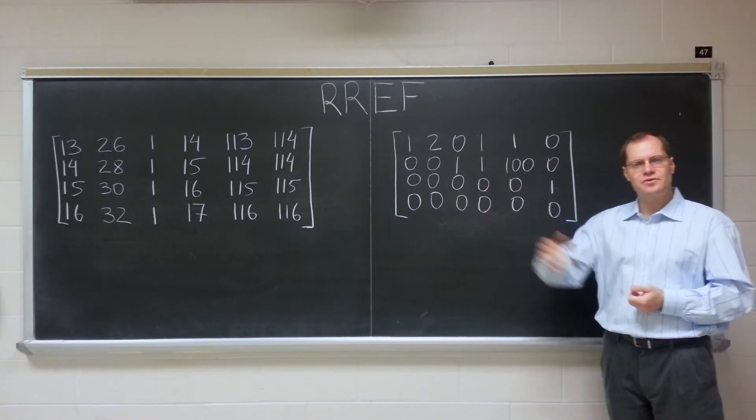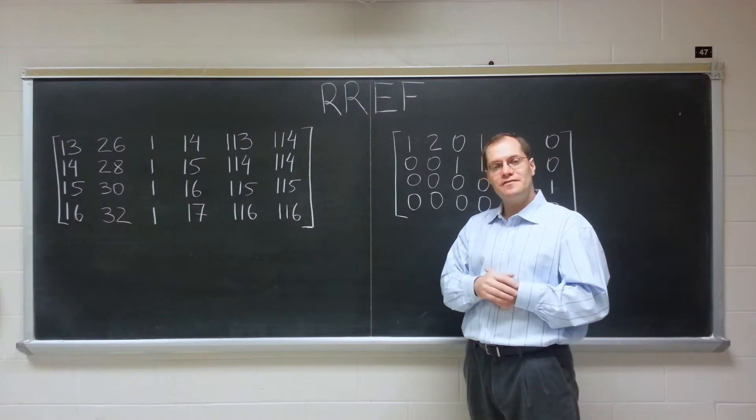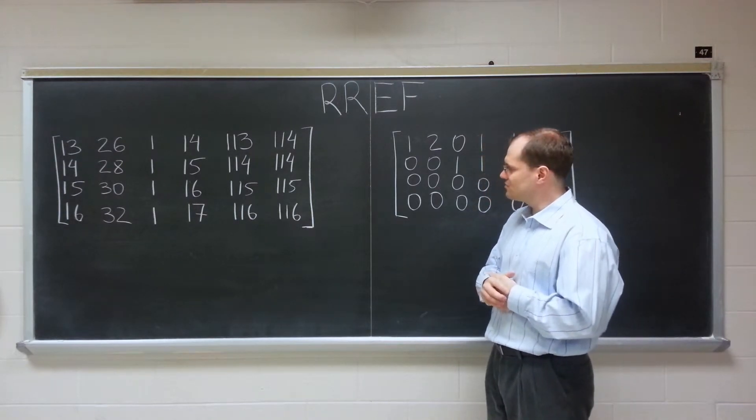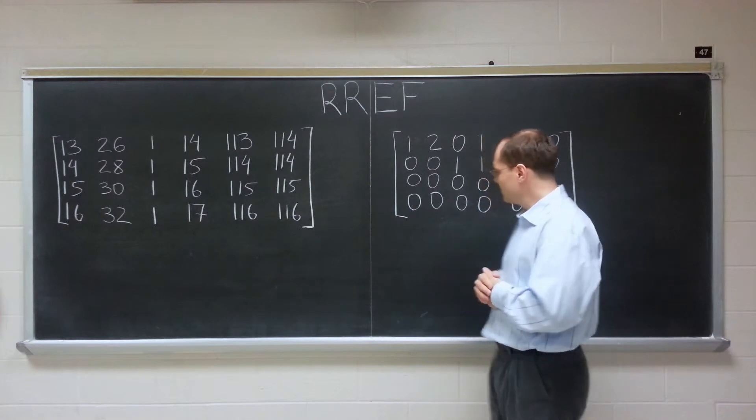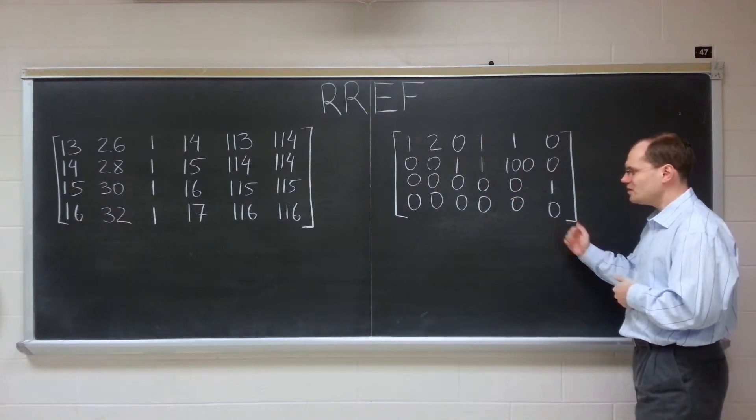This may be an impractical example, but you'll see tons of practical examples that illustrate this power of linear algebra. So there you go. This is the row reduced echelon form for that matrix. You can use MATLAB or Wolfram Alpha to check if you don't, or do it by hand. I don't think you will.